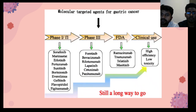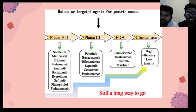Now we are looking at molecular targeted agents for gastric cancers. In this slide, we are seeing many phases and clinical uses of molecular targeted agents for gastric cancer. In different phases we use different types of drugs, but in clinical use we generally prefer high-efficiency, low-toxicity drugs.